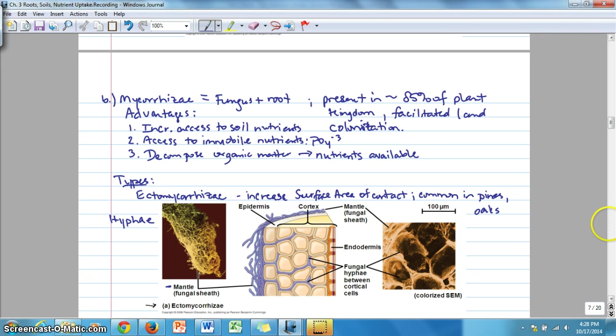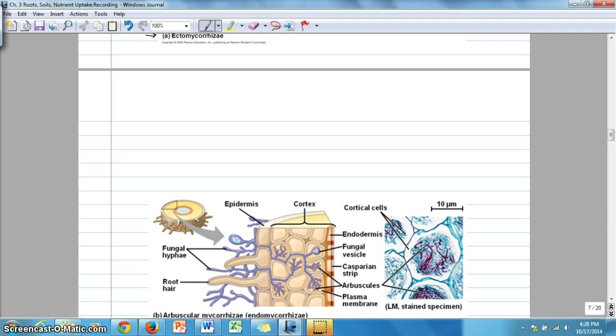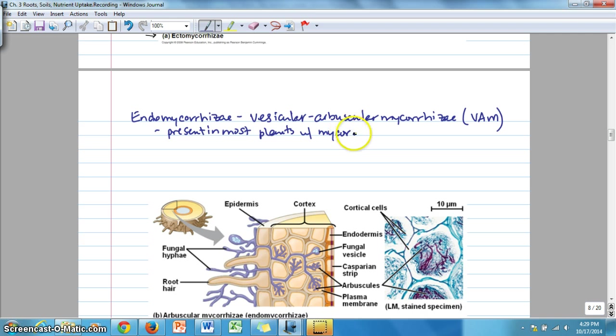Then the second type of mycorrhizae is shown in the next page here, which are endomycorrhizae, which is a general term. But the term that's most often used is vesicular arbuscular mycorrhizae. And so they can be abbreviated VAM, VAM mycorrhizae. This is the type that's present in most plant species that are mycorrhizal with mycorrhizae.